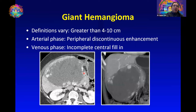Similar to a classic hemangioma, on the arterial phase we expect to see peripheral discontinuous enhancement, and because of the sheer size of the lesions on the venous phase we expect to see incomplete central fill-in.